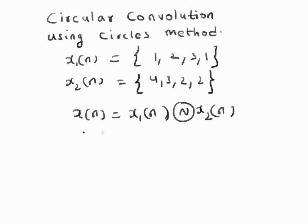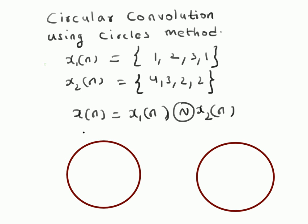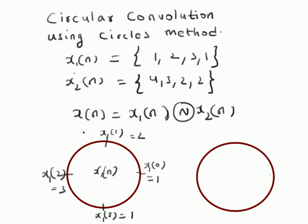The first step is to draw circles and represent these numbers on those circles. On the first circle we represent x1(n). Since there are four numbers, we represent them on the circle: x1(0) = 1, x1(1) = 2, x1(2) = 3, and x1(3) = 1.